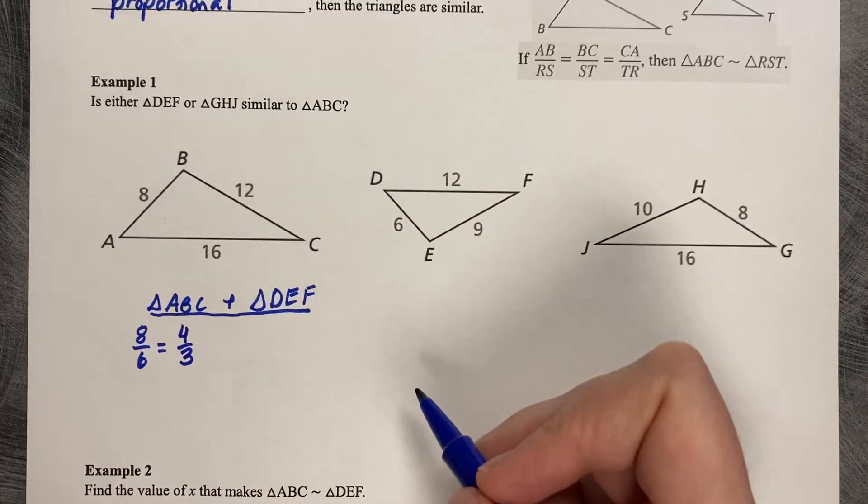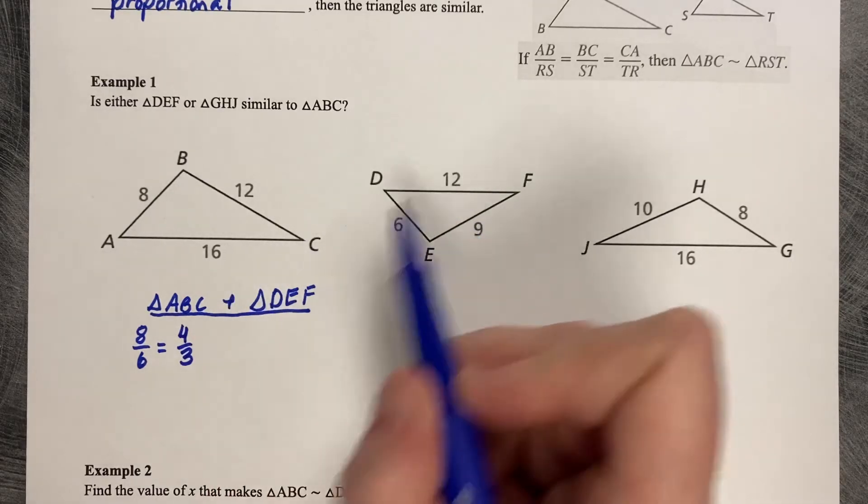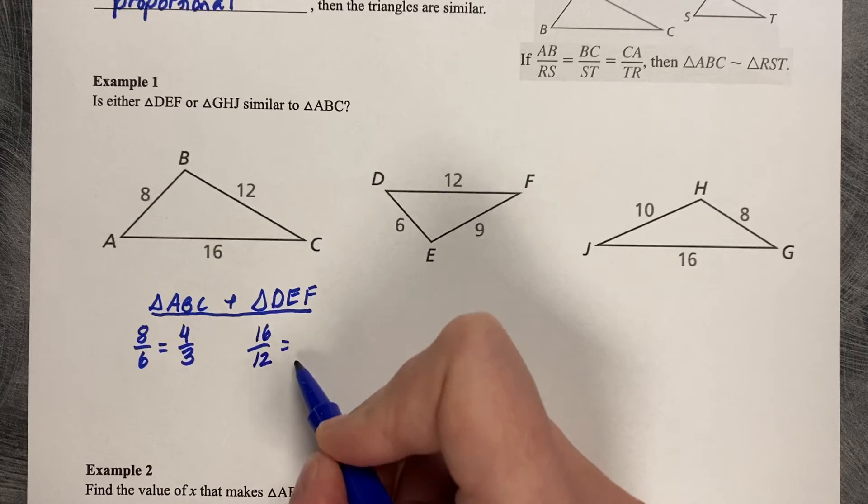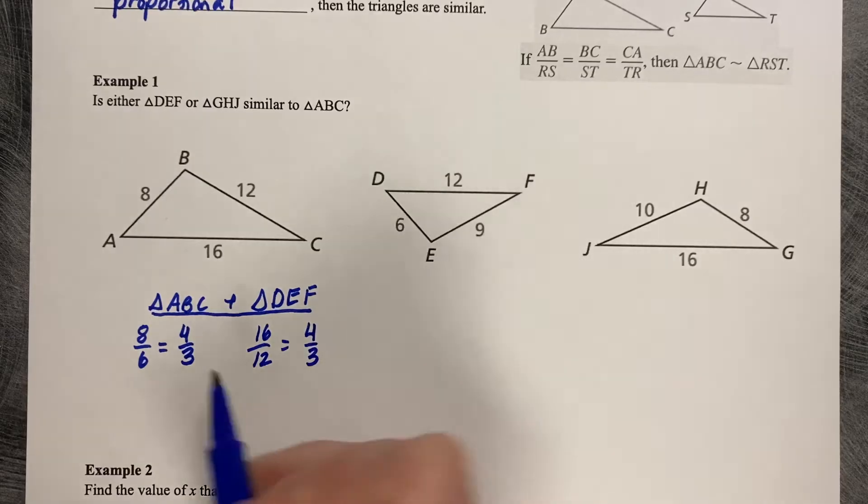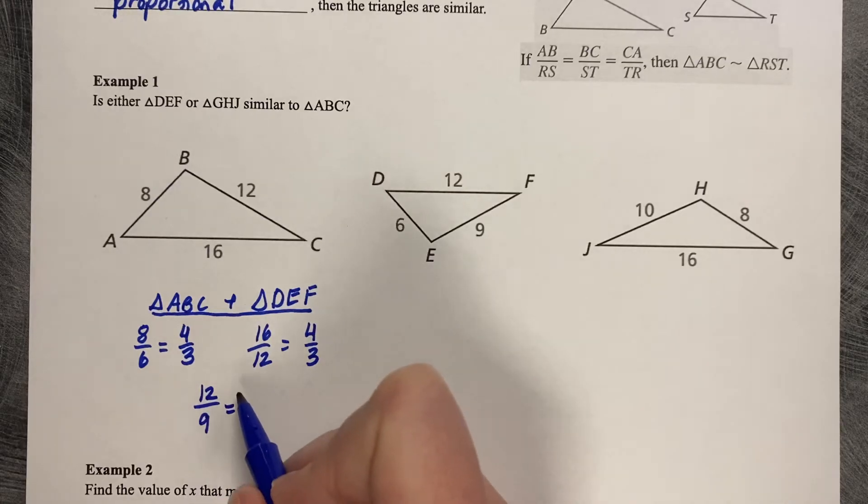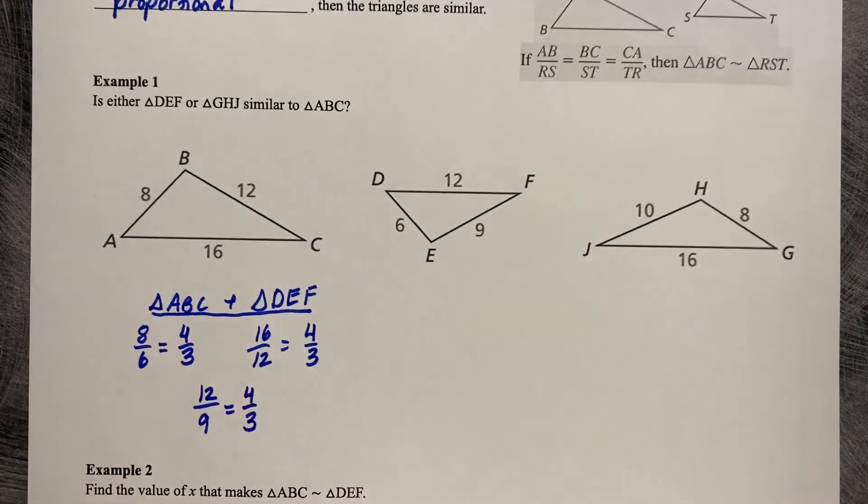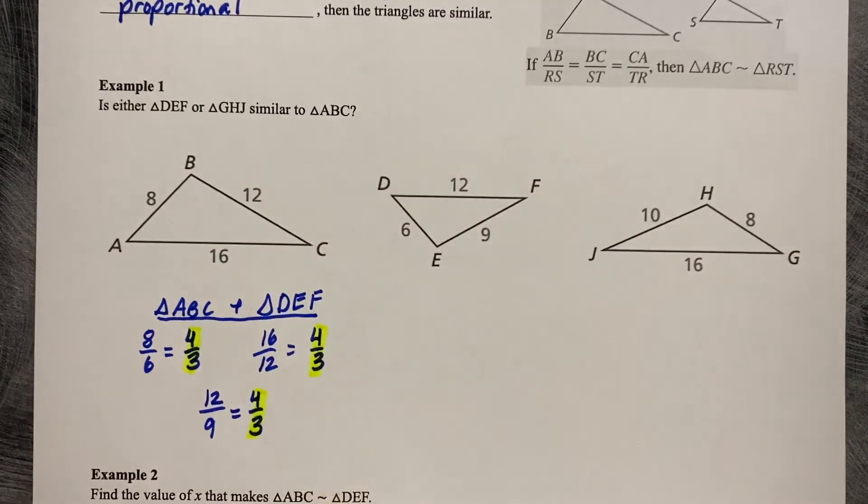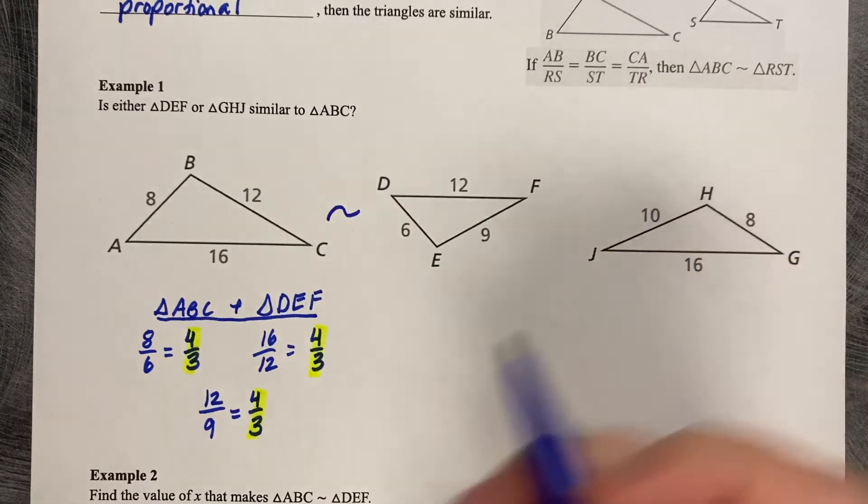Let's compare the next side lengths to each other. Let's compare 16 to 12, 8 is to 6, and then again 4 is to 3. So far so good. And then the last two side lengths, 12 compared to 9. They both divide by 3, so that's going to be 4 thirds. So because all of these ratios match, ABC is similar to DEF.